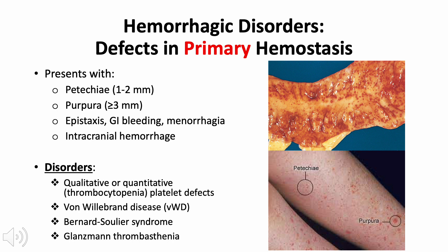Mucosal bleeding in primary hemostasis defects may also present as epistaxis, gastrointestinal bleeding, or excessive menstruation. Remember, if there is excessive menstruation, that can lead to anemia - specifically iron deficiency anemia.